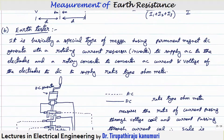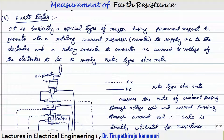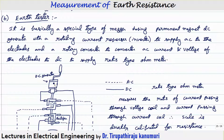The second procedure uses an earth tester. In the previous procedure, an AC supply is required wherever you want to test the earth electrode, but sometimes AC may not be available. In that case, we go for the earth tester, which is basically a special type of meter discussed in previous lectures, having a permanent magnet DC generator.